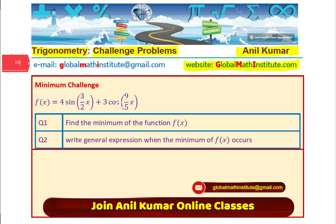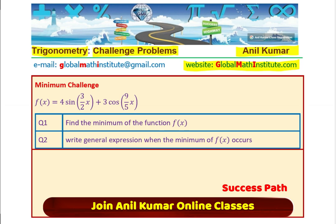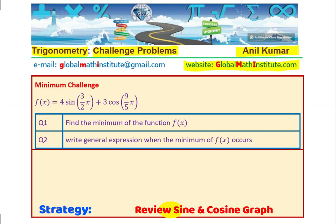So I hope the question is very clear to you. First, we have to find the minimum value which this function can have and since it is a periodic function, that value will repeat and therefore, we have to provide a general solution. When will it occur? So you can pause the video, try it out. Let us understand how do we solve such questions.